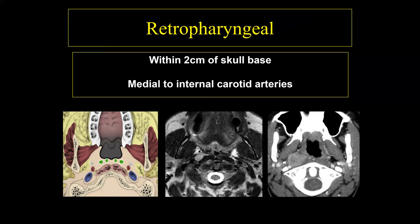The retropharyngeal lymph nodes have a lateral and medial group. As patients get older, the lateral group becomes more likely to be involved by metastases. These are typically located just medial to the carotid artery, within two centimeters of the skull base. There is no way for referring physicians to palpate these lymph nodes, so we as radiologists have to look for them in every single study we perform.